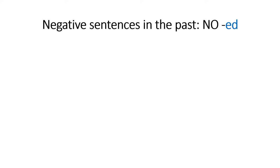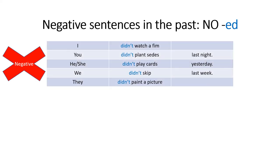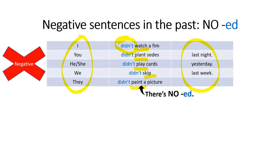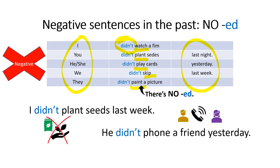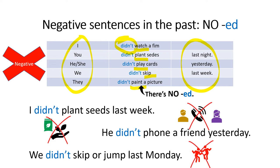Now we need to know how to say negative sentences in the past. We start again with the person or people you are talking about, but then look at the verbs — they haven't got -ed at the end. Why not? Because we have the word didn't. There's no -ed at the end of the verb because didn't is already in the past. So our sentences become: I didn't plant seeds last week. He didn't phone a friend yesterday. We didn't skip or jump last Monday.